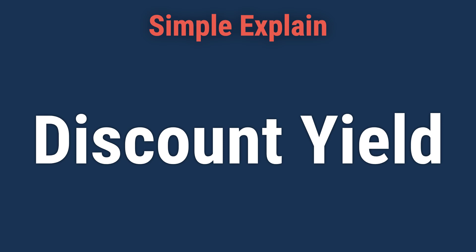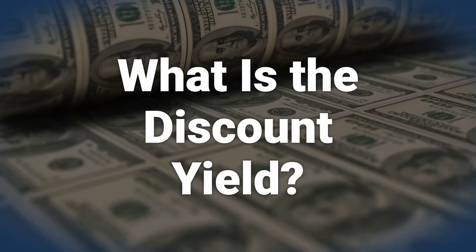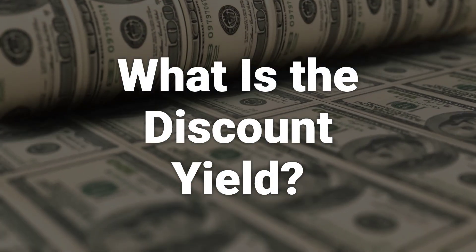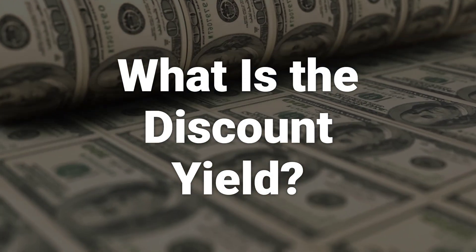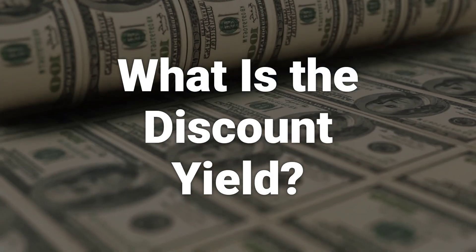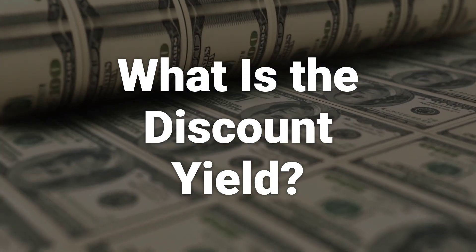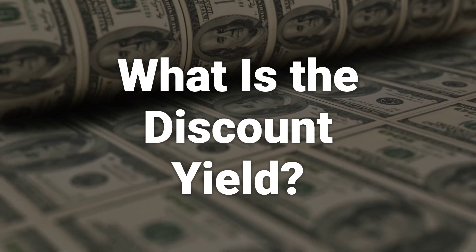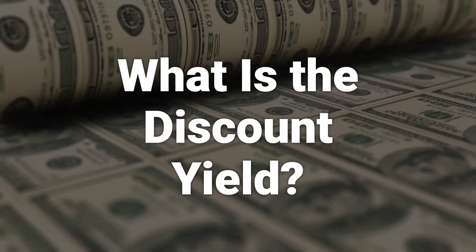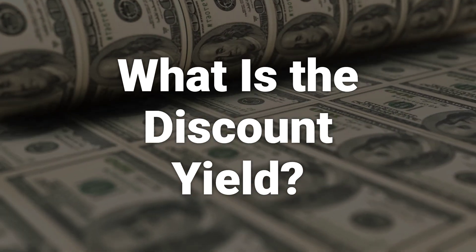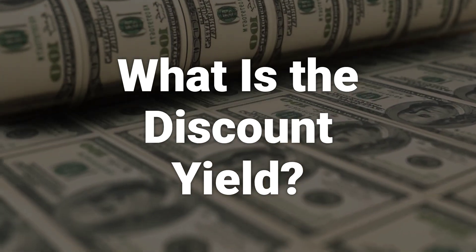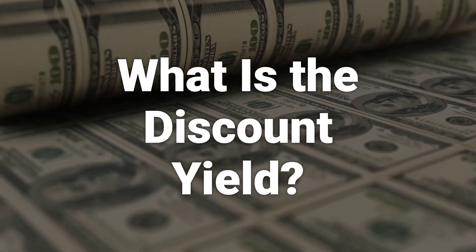Hi! Let's learn about the discount yield formula, meaning, and examples. The discount yield is a way of calculating a bond's return when it is sold at a discount to its face value, expressed as a percentage.